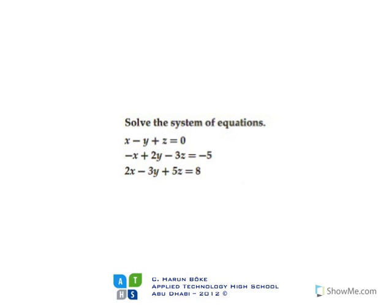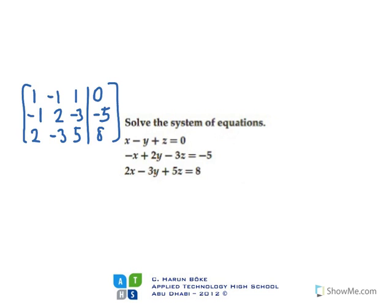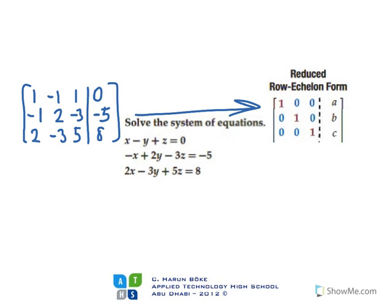To solve this equation, first we are going to write the augmented matrix. Then, by using matrix operations, we will produce a matrix called reduced row echelon form.